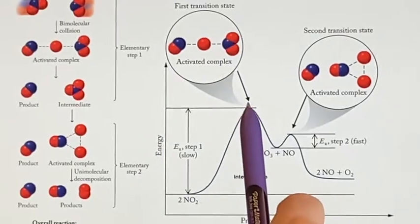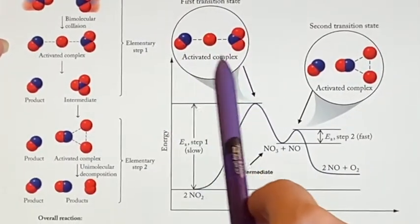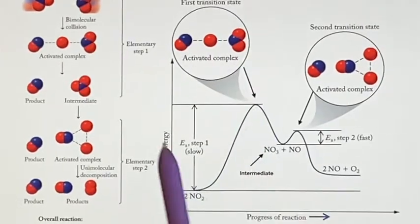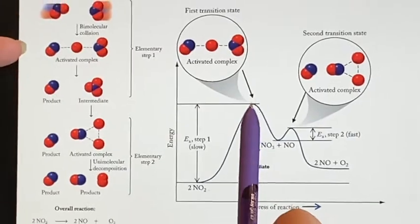All this energy had to be put into it in order to create this activated complex, also known as a transition state. And in this reaction, it would be the first transition state because it's in the first step.